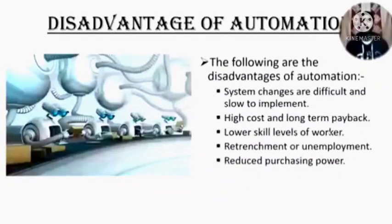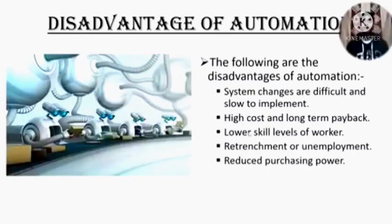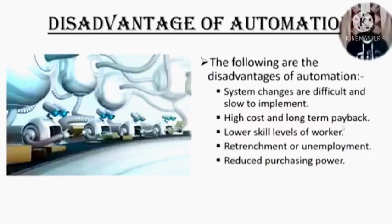As we know, along with advantages, all things come with disadvantages. Now we will see the disadvantages of automation. Its disadvantages are: system changes are difficult and slow to implement; high cost and long-term payback; lower skill level for labor workers; retrenchment or unemployment is a concern; reduced purchasing power.